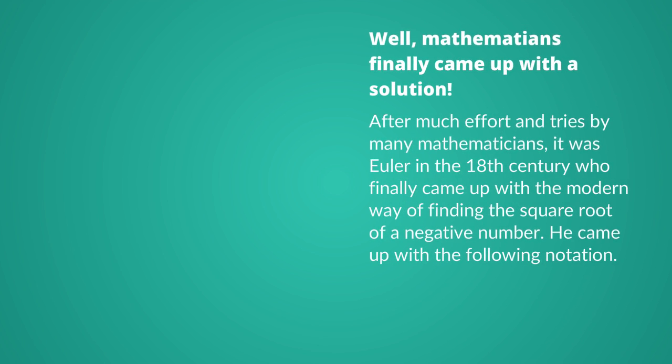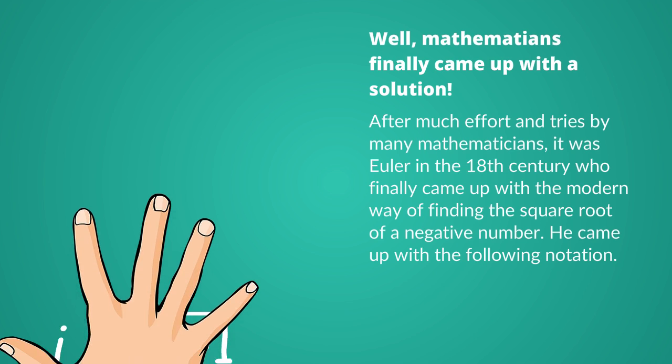Well, mathematicians finally came up with a solution to this problem. After much effort and tries by many mathematicians, it was Euler in the 18th century who finally came up with the modern way of finding the square root of a negative number. He came up with the following notation.